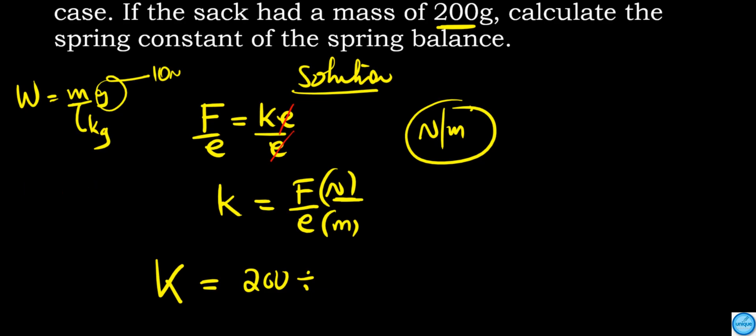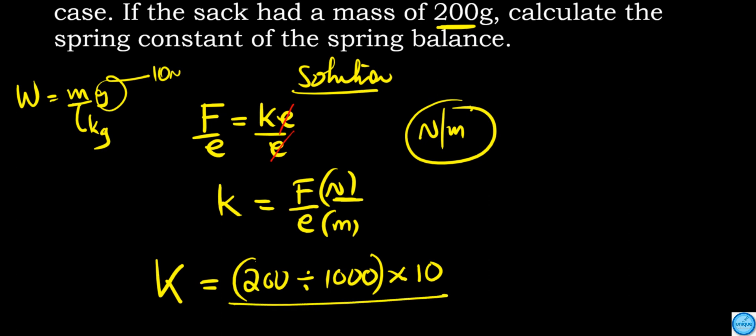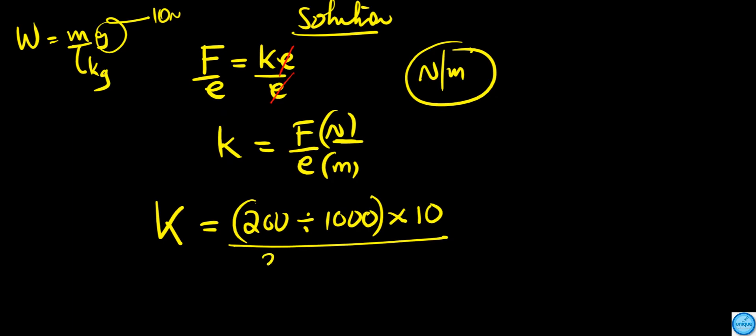We're gonna divide this by the extension, which is 3 centimeters. So we're putting here 3 centimeters, and we convert to meters by dividing by 100. So k equals (200 divided by 1000) times 10.